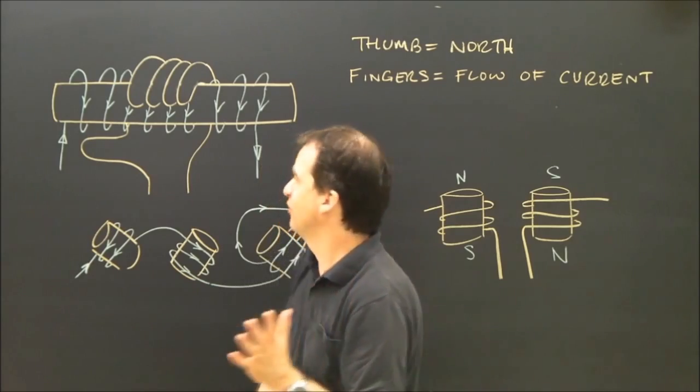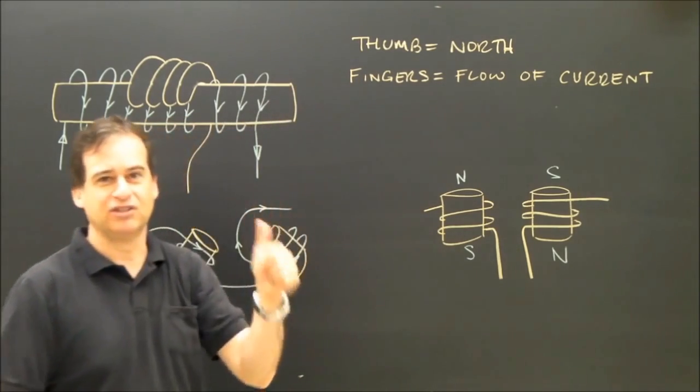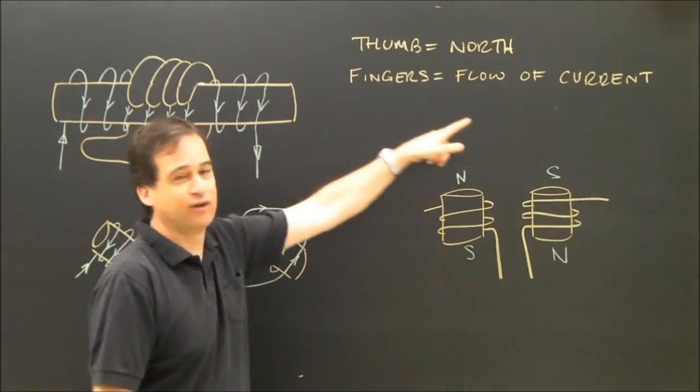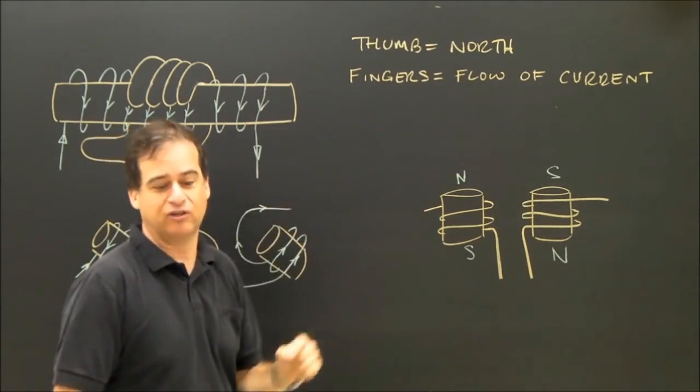And we have a very simple rule for that. If you're using left-hand rules, the rule is your thumb points in the direction of north, and your fingers are in the direction of the flow of the current.